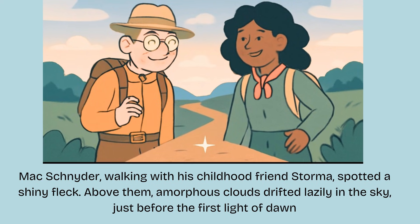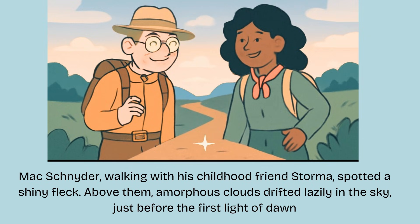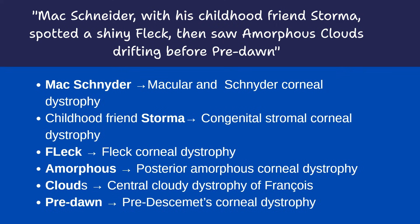Here is your visual mnemonic for stromal dystrophies: picture Mac Schneider walking alongside his childhood friend named Storma. As they stroll, they spot a shiny fleck glimmering on the ground. Above them are amorphous clouds drifting lazily across the sky, just before the first light of dawn. Mac → macular corneal dystrophy; Schneider → Schnyder corneal dystrophy; Storma → congenital stromal corneal dystrophy; fleck → fleck corneal dystrophy; amorphous clouds → posterior amorphous dystrophy; clouds → central cloudy dystrophy of François; pre-dawn light → pre-Descemet's corneal dystrophy.